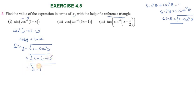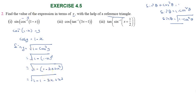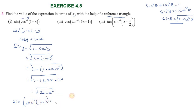Expanding: 1 minus (1 minus 2x plus x squared) gives minus 2x plus x squared. Simplifying with the cancellation, we get the square root of 2x minus x squared. So sin of cos inverse of (1 minus x) equals square root of 2x minus x squared.